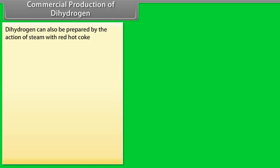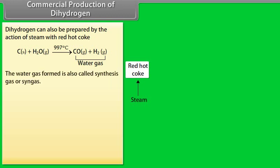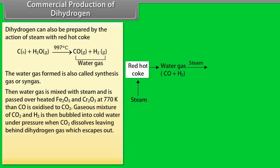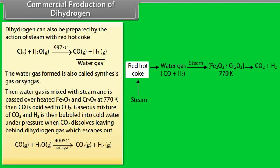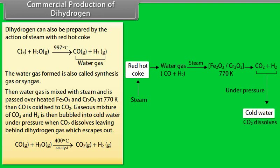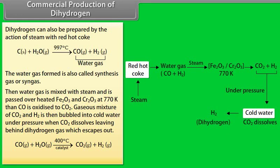Commercial production of dihydrogen. Dihydrogen can be prepared by the action of steam with red hot coke as given below. The water gas formed is also called synthesis gas or syngas. Then water gas is mixed with steam and is passed over heated Fe2O3 and CR2O3 at 770 Kelvin then CO is oxidized to CO2. Gaseous mixture of CO2 and H2 is then bubbled into cold water under pressure when CO2 dissolves leaving behind dihydrogen gas which escapes out. This reaction is called water gas shift reaction.